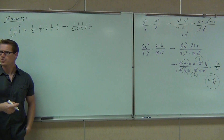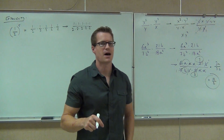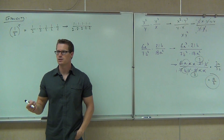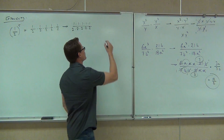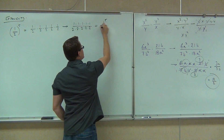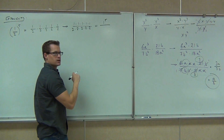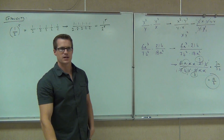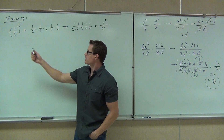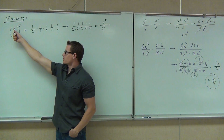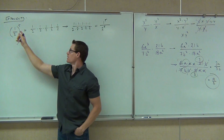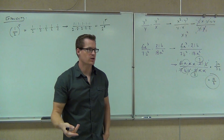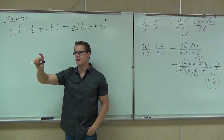One times one times one times one times one over all the denominators multiplied: two times two times two times two times two. You're basically just multiplying fractions. But I want you to think about what this means. What does one times one times one times one times one actually equal? One — and we can write it as one to the fifth. And instead of two times two times two times two times two, we can write that as two to the fifth. What I'm trying to show you is that this is actually a form of an exponent rule. If you have one half to the fifth power, that equates to the numerator to the fifth power over the denominator to the fifth power.